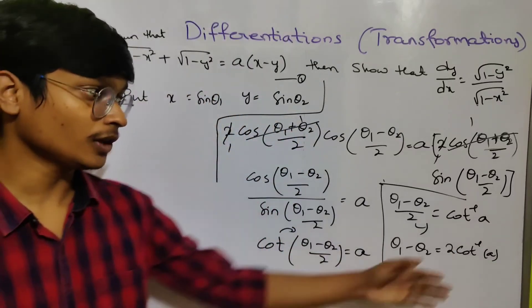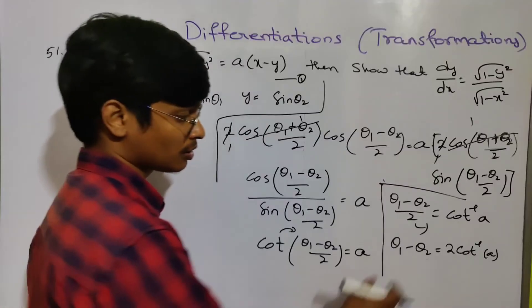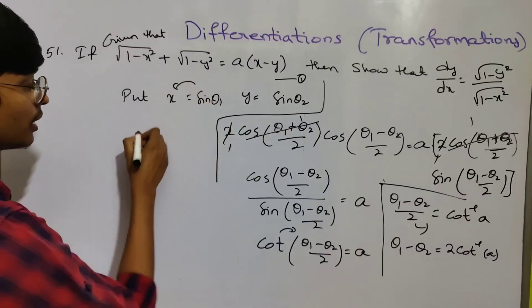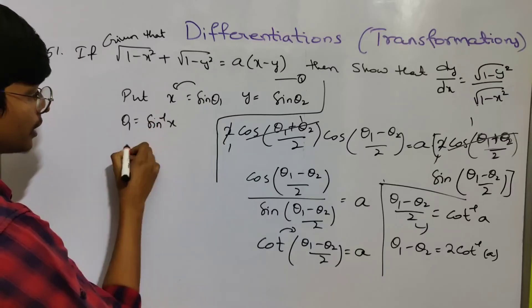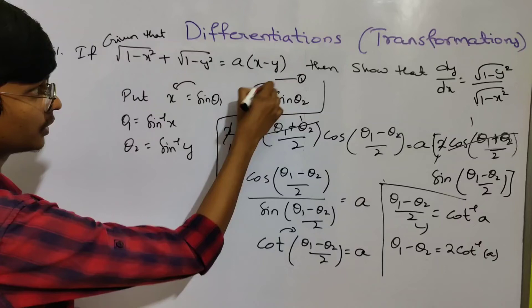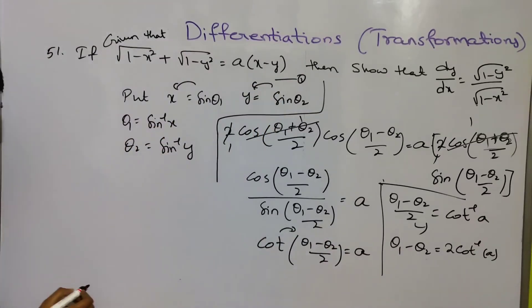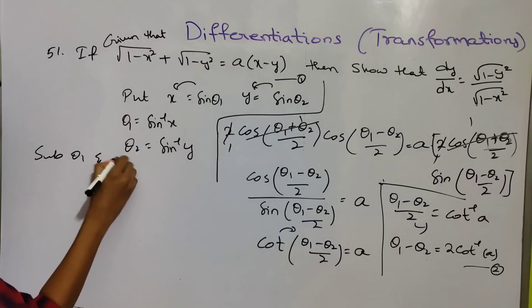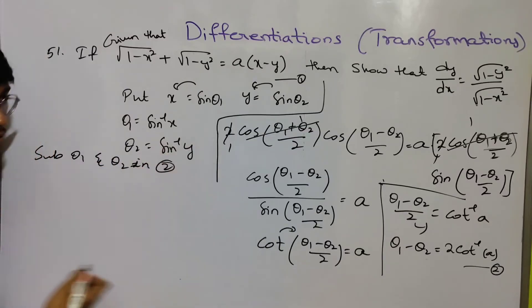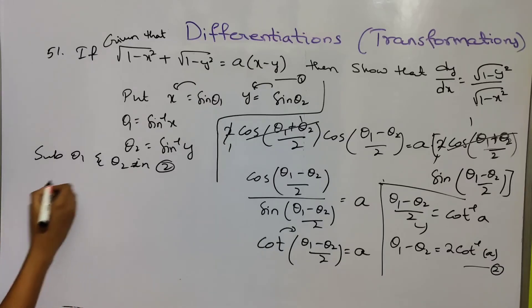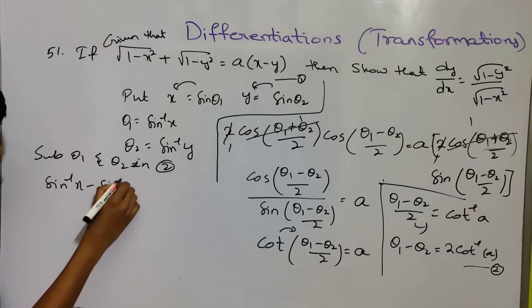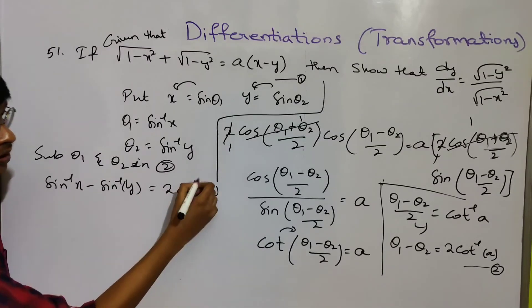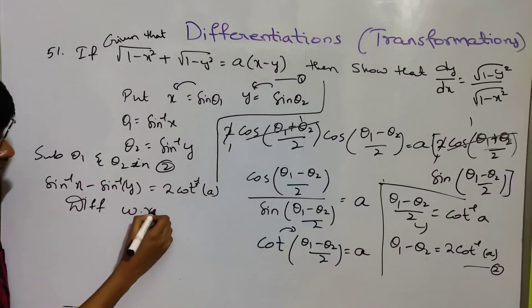What does a mean? A means a constant. So θ₁ - θ₂ value: θ₁ = sin⁻¹(x) and θ₂ = sin⁻¹(y). Substituting back, sin⁻¹(x) - sin⁻¹(y) = 2 cot⁻¹(a). Now differentiate with respect to x. Differentiation is simple.